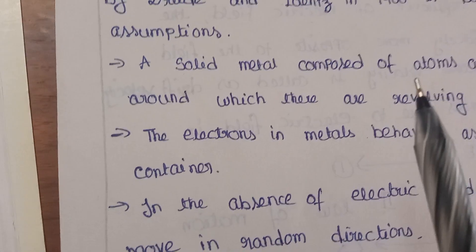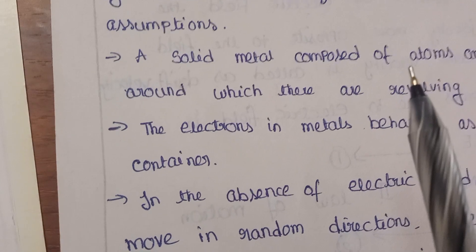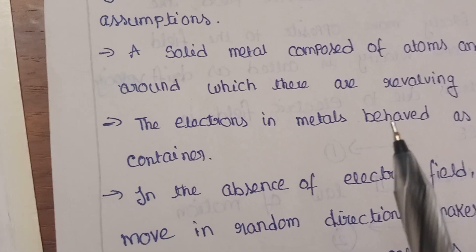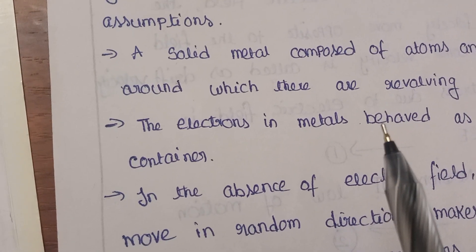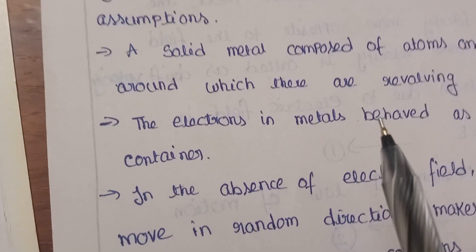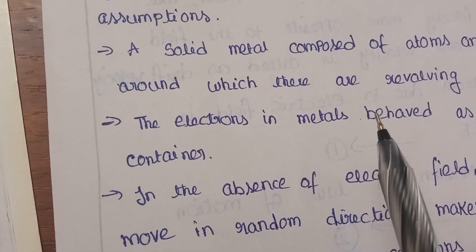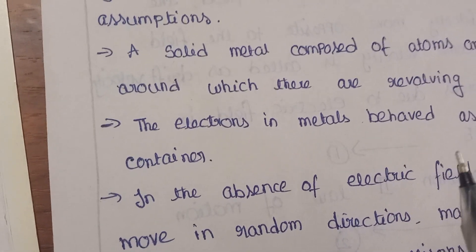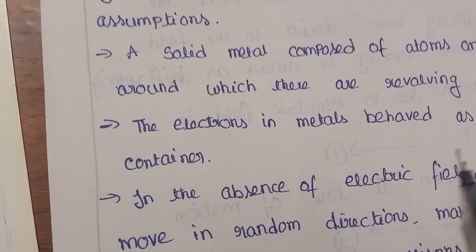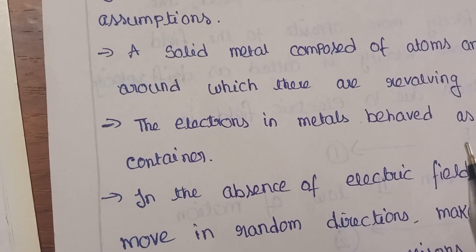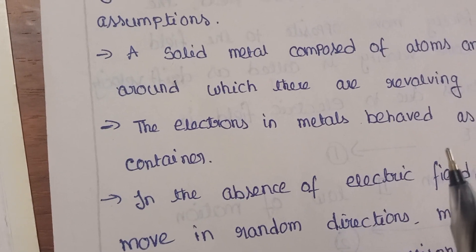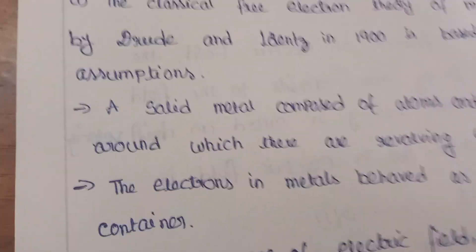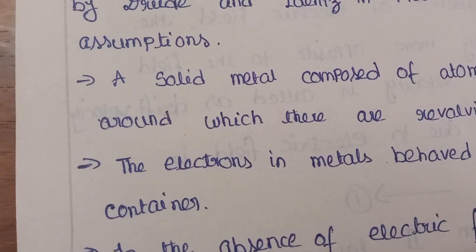If you apply an electric field on a metallic conductor, it exerts a force on the free electrons — that force is the Lorentz force — which starts accelerating the electrons towards the positive terminal. As the free electrons move, they collide again and again with the positive ions of the metal, and each collision destroys the extra velocity gained by the electrons.